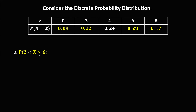For this problem, we find the probability that x is greater than 2 but less than or equal to 6. X equals 2 marks the lower bound, and since x is less than or equal to 6, x equals 6 is included. We add the corresponding probabilities: 0.24 plus 0.28, so the probability that x is greater than 2 but less than or equal to 6 is 0.52.